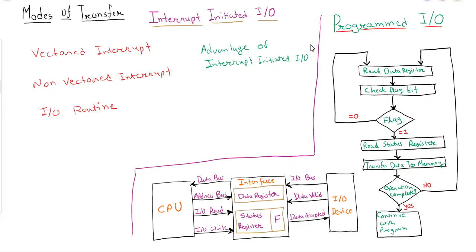In this tutorial we will discuss Programmed IO. First, let us understand the configuration or arrangement of elements: there is the CPU, the interface, and the input/output device. To perform Programmed IO, the CPU will initialize the interface, and then through the interface, data will be sent to the IO device. Now let us understand how the input operation is performed.